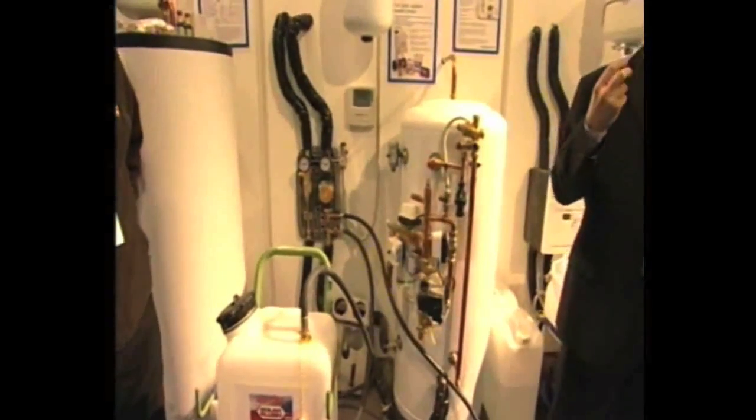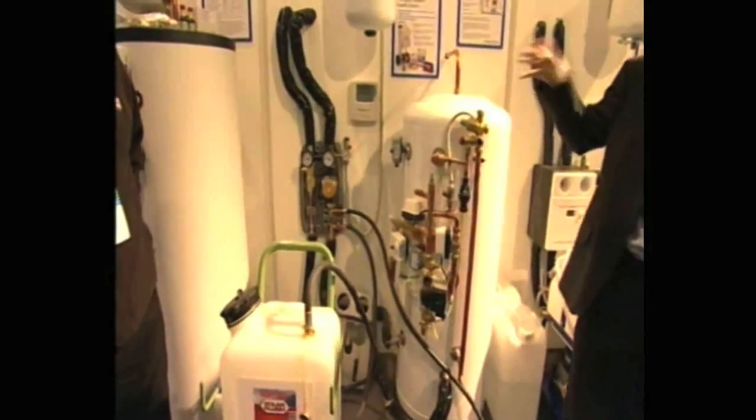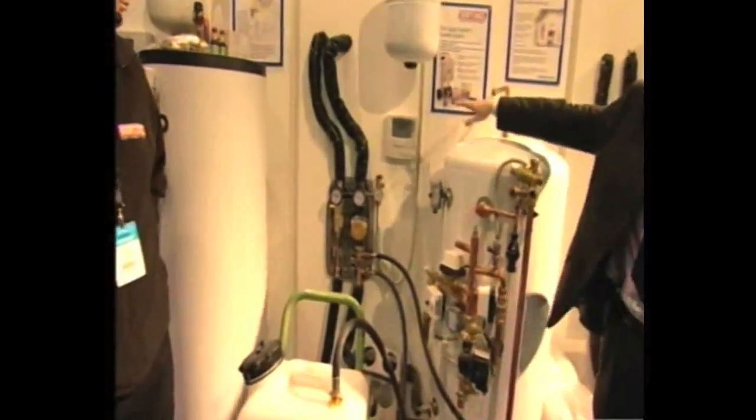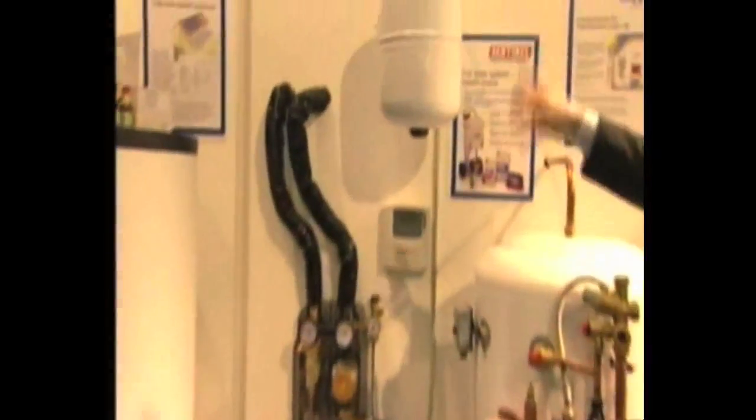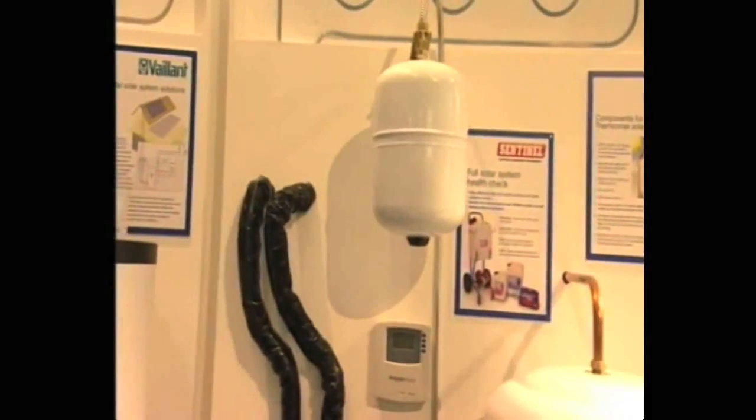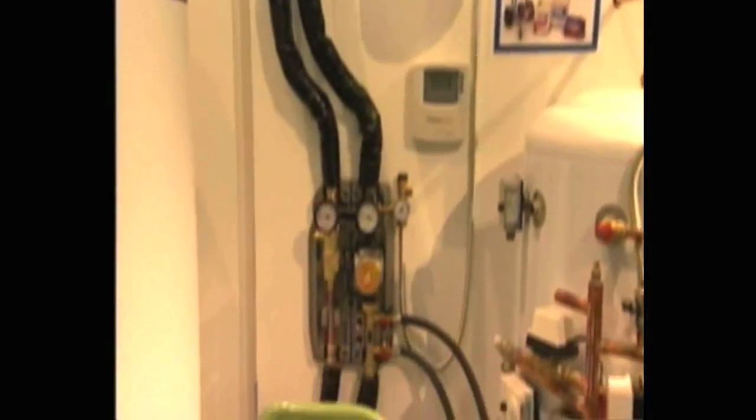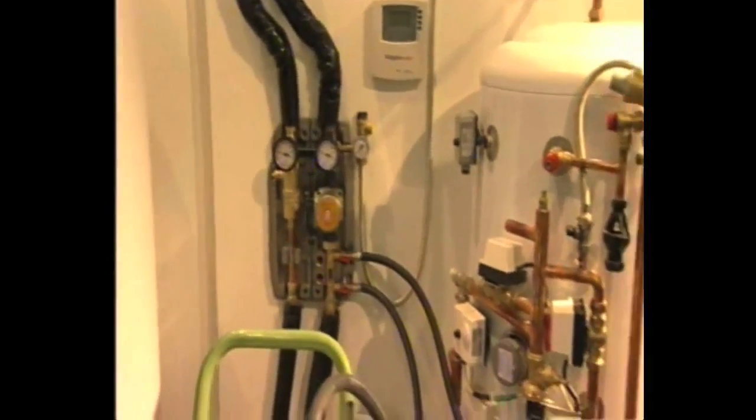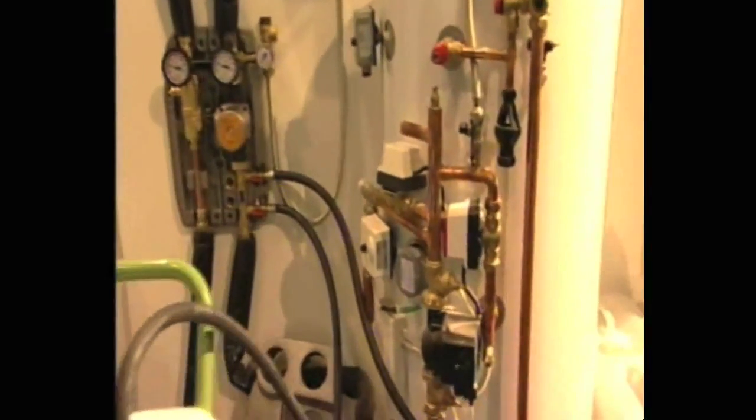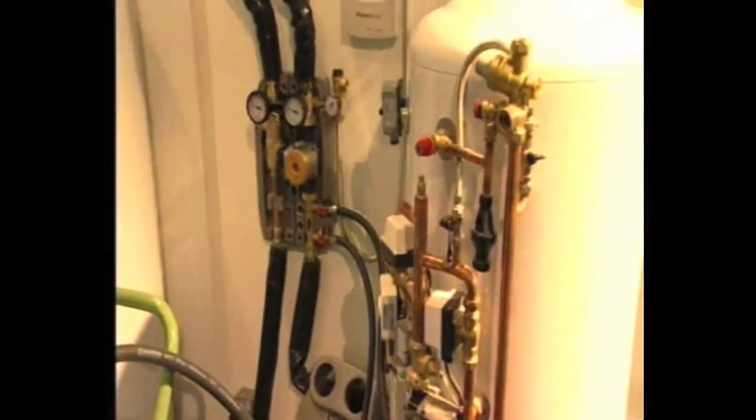The only additional materials that you wouldn't normally be used to would be the pump station, a controller, and an expansion vessel for the pressurized loop. That's really all there is to the system. So hopefully today you can see the collector and the associated components, and that will hopefully remove any of the mystery as well.